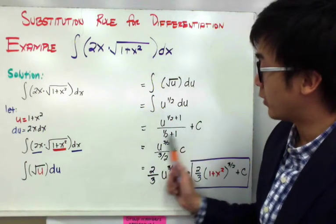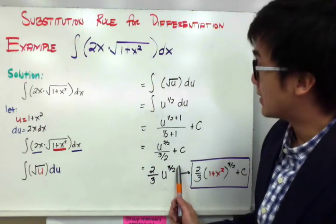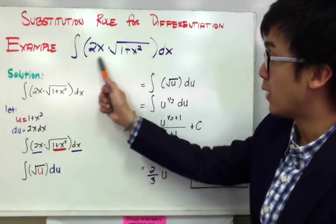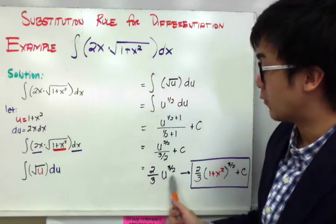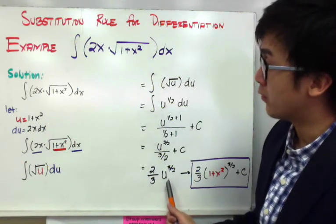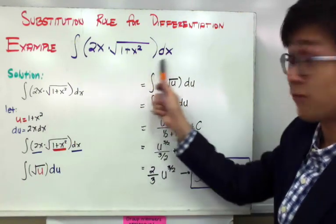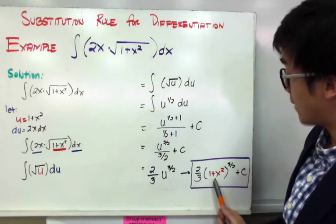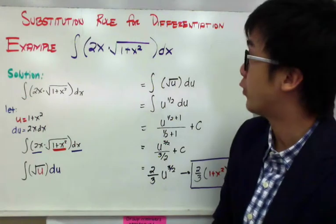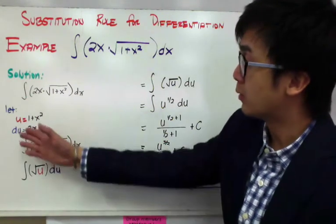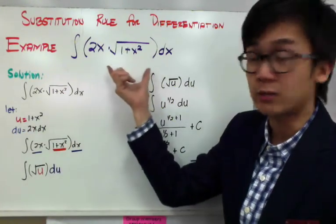Simplifying, we get two-thirds u raised to three over two plus C. Since we started with 2x times the square root of 1 plus x squared dx, we need to return to our original variable. So instead of u, we substitute back 1 plus x squared. Therefore, our final answer is two-thirds times (1 plus x squared) raised to three over two plus C. That's how we use the substitution rule, letting us use u and du to evaluate the integral.